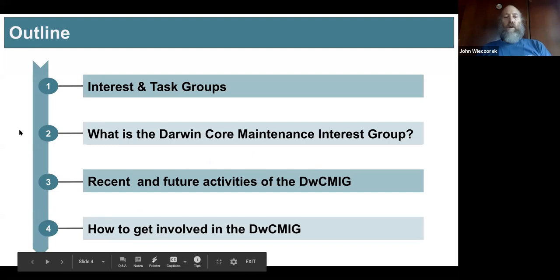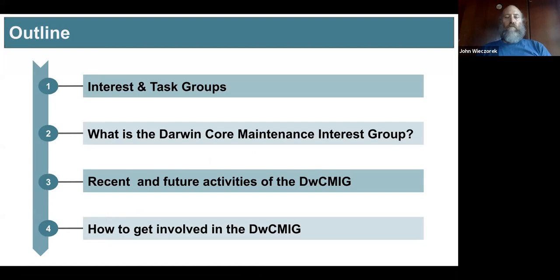There are four basic topics I'd like to cover today. They include something about interest groups and task groups and how they function; then specifically what is this Darwin Core Maintenance Interest Group all about; then I'll talk about what we've been doing lately and what we're in progress to do; and finally, a little bit of detail about how to get involved in the group if that interests you. After that, we'll have questions, and after that, we'll see if we can get some collaborative work time.